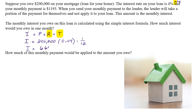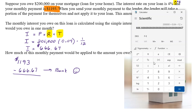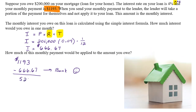Does that seem like a lot? Yeah, it is. You have to pay this much interest. So when you send in your monthly payment of $1,193, the bank takes out the interest you owe — $666.67 — for themselves, and they go lend that money to somebody else and make more money off it. Let's see what's left: $1,193 minus $666.67 leaves less than half — $526.33.